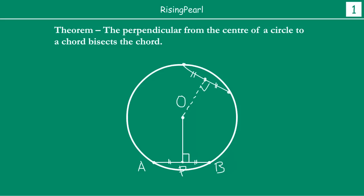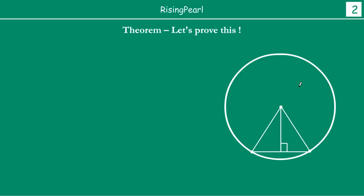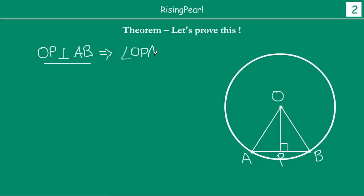Now we know clearly what the theorem is and what we have to prove. Let us get into the proof itself. We have drawn the circle with center O, and we have the chord AB. We have also drawn a perpendicular OP passing through the center, perpendicular on AB, intersecting AB at point P. So OP is perpendicular to AB. This means angle OPA is equal to angle OPB, both equal to 90 degrees.